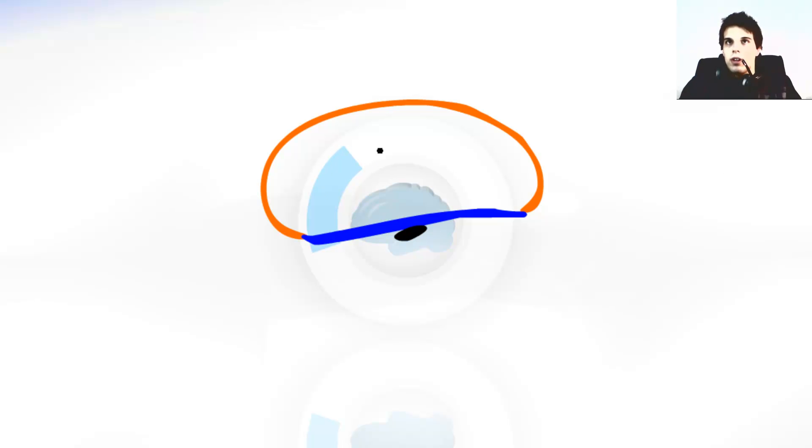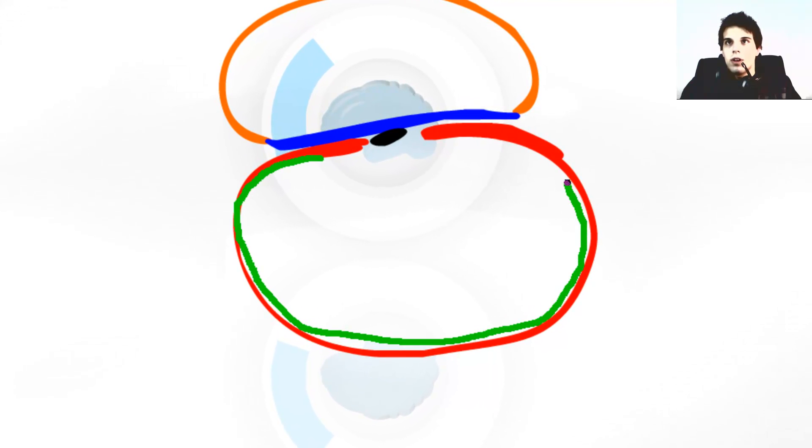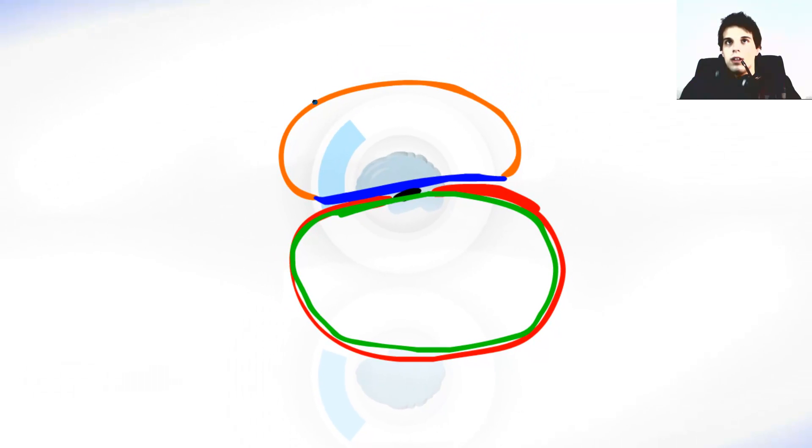And this over here is the amniotic cavity. Then we had the mesoderm over here, and it goes something like this. That's the mesoderm. Then comes the endoderm over here. So we had the amnion, the amniotic cavity, the ectoderm, the notochord, the mesoderm, and the endoderm.